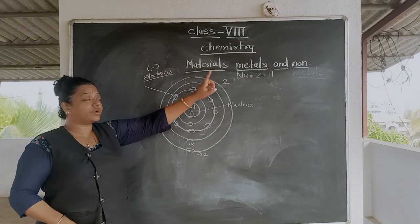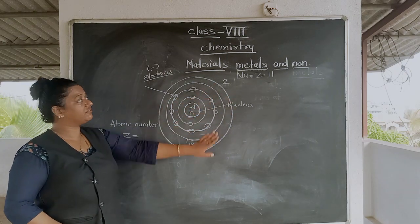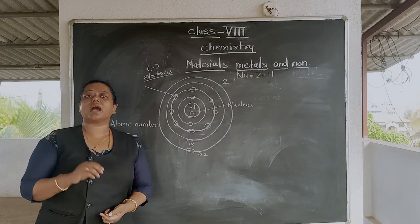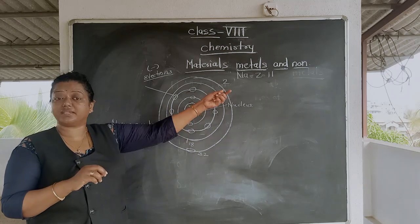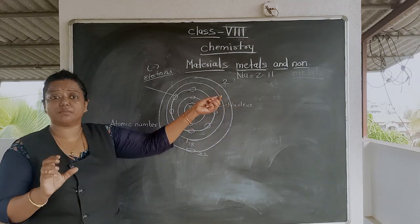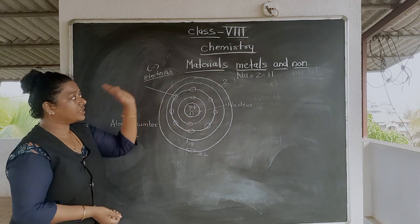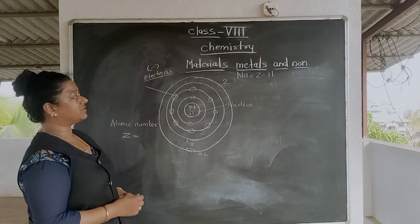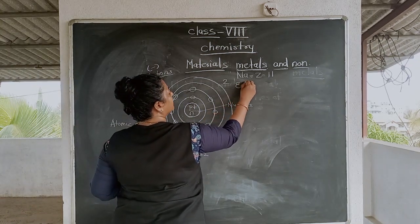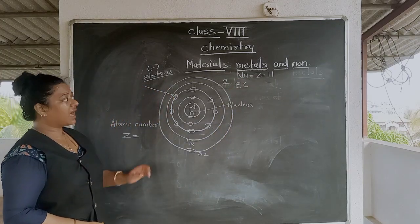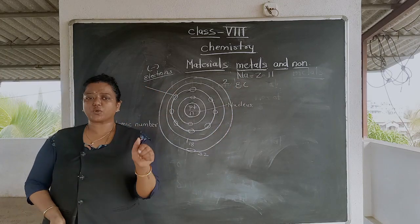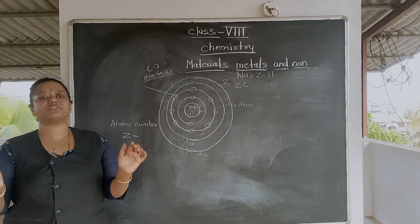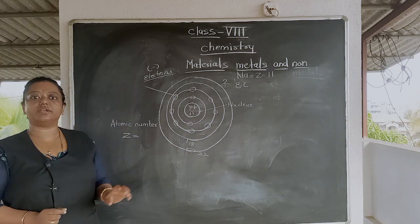Atomic number is denoted by letter Z. If we take the example of sodium, the atomic number is 11, meaning 11 protons or 11 electrons. The second concept is electronic configuration — how these 11 electrons are divided or sorted into the atom's shells.